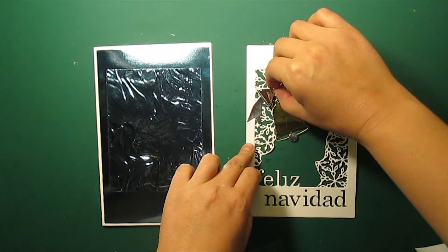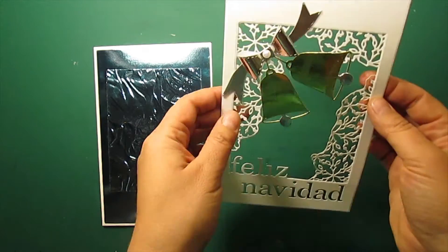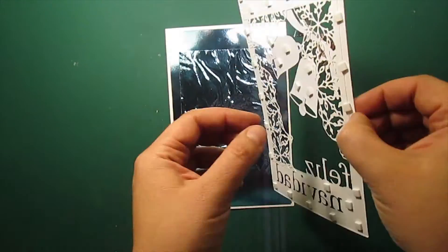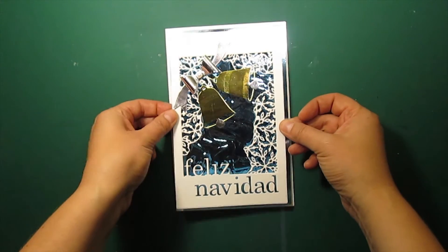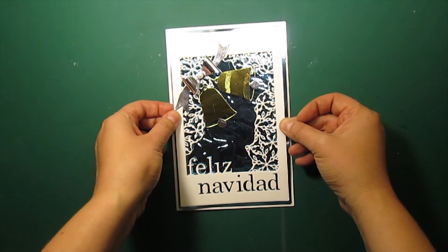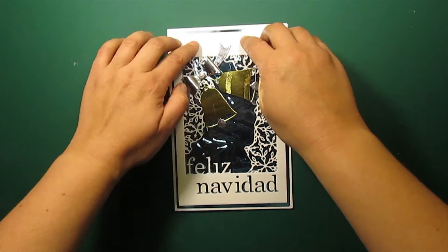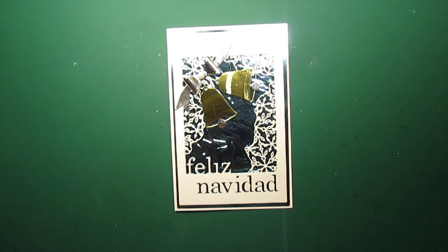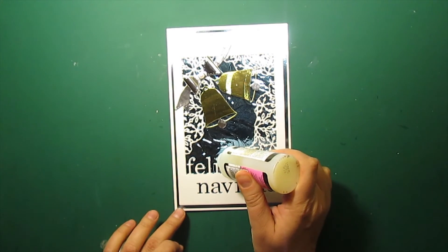I'm also adding a pearl to the bow and now the frame is ready to be mounted on a card base. All it's left to do is to complete the letter I.